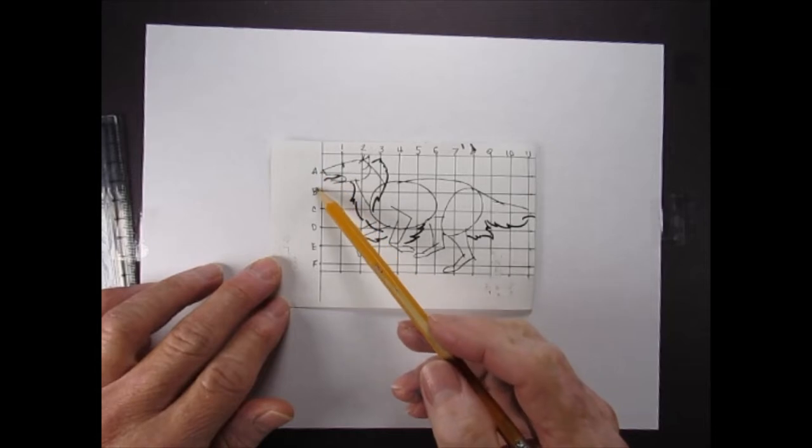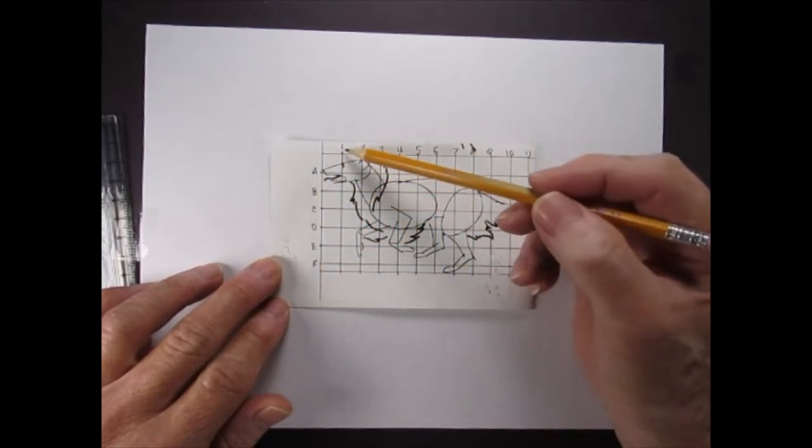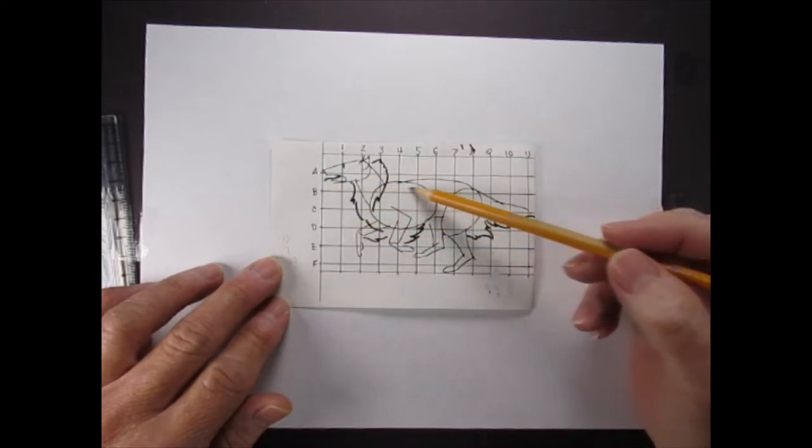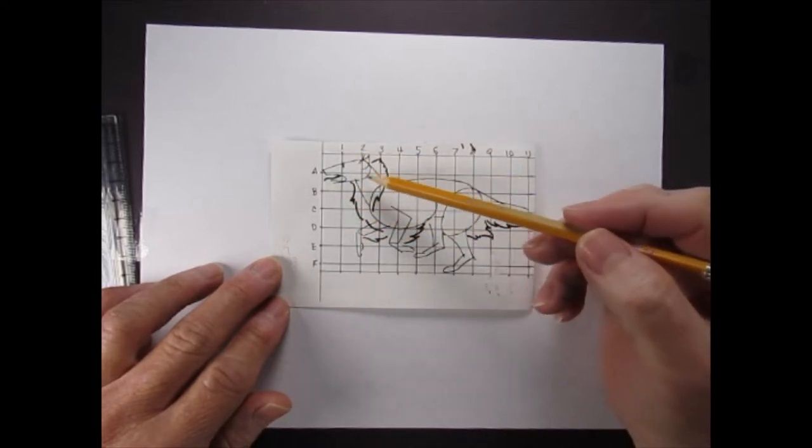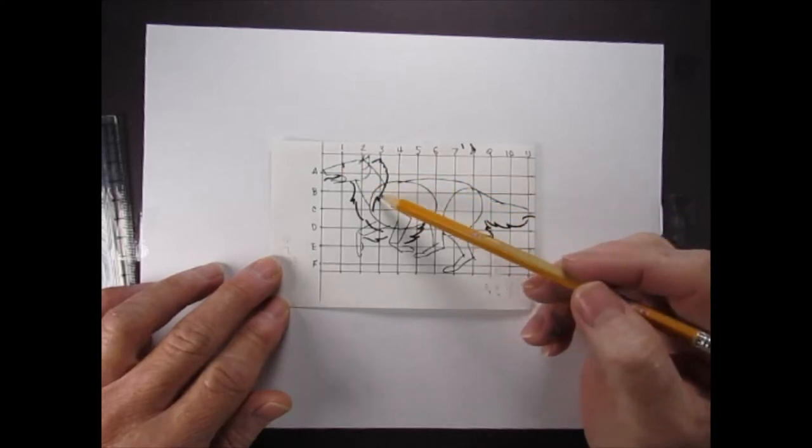And in here, you'll notice I have A, B, C, D, E, F. And this here is so we can get a reference point, the intersections, and it helps us in setting up our contours, our lines.